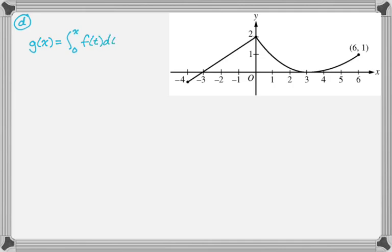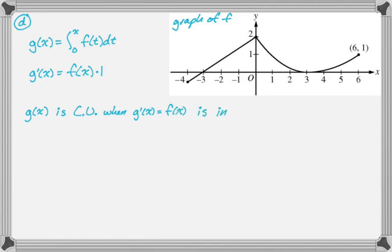g of x is equal to the integral from 0 to x of f of t dt. So I'm going to second fundamental theorem this thing, which means the integrand evaluated at the upper bound times the derivative of the upper bound, which is just 1. So I know that g prime is equal to f of x. Now, if I want the function to be concave up, I need its derivative to be increasing. This is our graph of f. So f is g prime, so I need the derivative to be increasing. g of x is concave up when g prime of x, which is equal to f of x, is increasing.